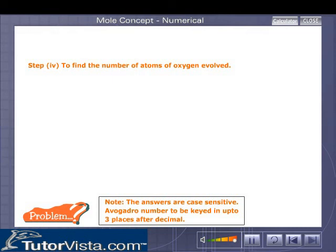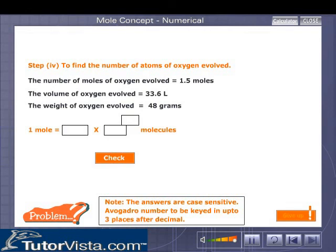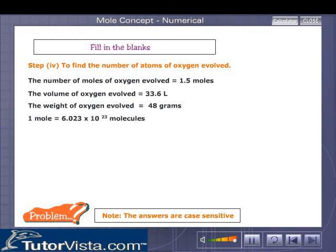We now proceed to solving step 4: to find the number of atoms of oxygen evolved. We've got the following data with us. The number of moles of oxygen evolved equal to 1.5 moles. The volume of oxygen evolved equal to 33.6 liters. The weight of oxygen evolved equal to 48 grams. One mole is equal to... fill it up. Use the hint in the header and don't forget the units. Good!